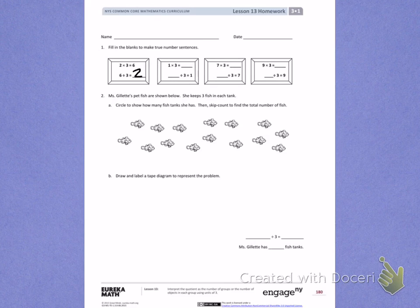Next, I have 1 group of 3. 1 group of 3 is just 3. Moving that number down, I have 3 divided by 3 equals 1. Use skip counting to help you fill in the missing numbers for the next two boxes.